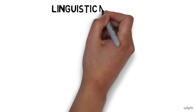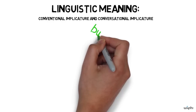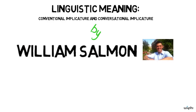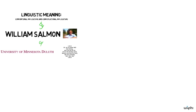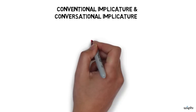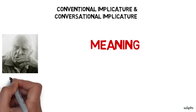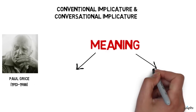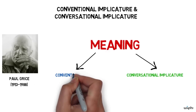My name is Will Salmon, and I'm an assistant professor of linguistics at the University of Minnesota, Duluth. Today I'm going to talk to you about different kinds of linguistic meaning, specifically about conventional implicature and conversational implicature. This is one way of dividing up linguistic meaning that's been very influential over the last 40 years or so, growing out of the work of the Oxford philosopher Paul Grice.